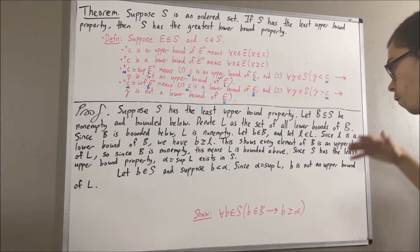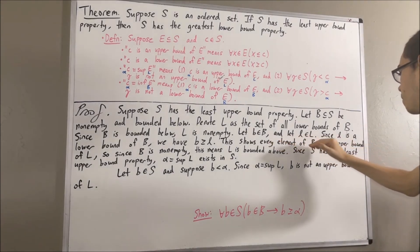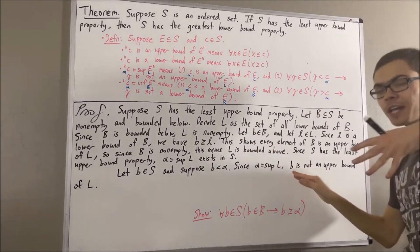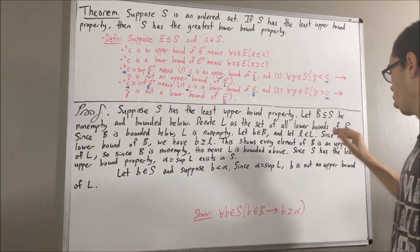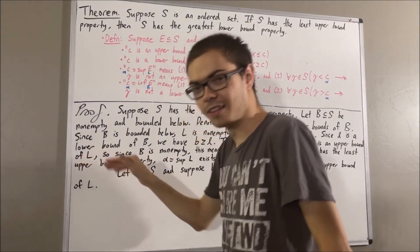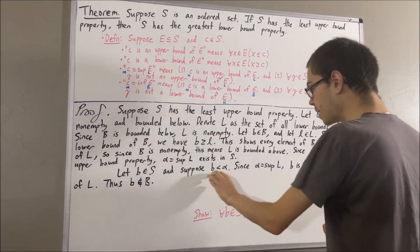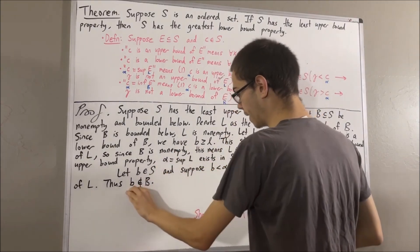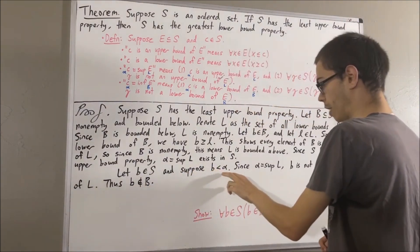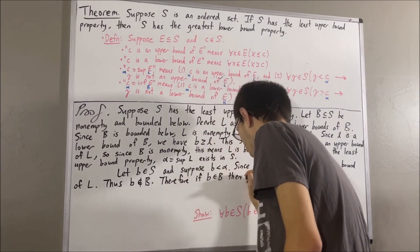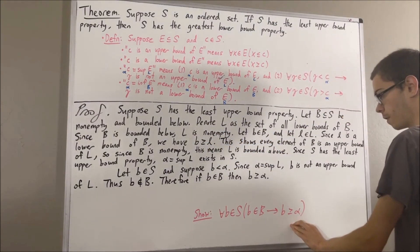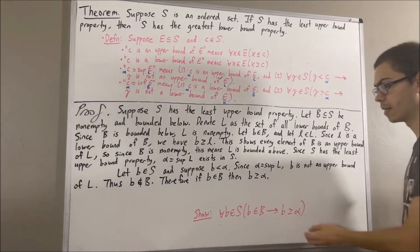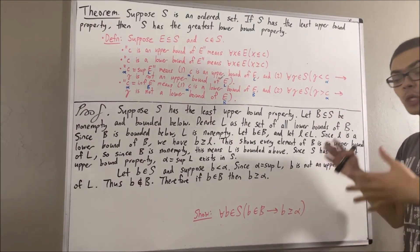So we have proven: if B is less than alpha, then B is not an element of B. And by the contrapositive, this means we have proven: if B is an element of B, then B is greater than or equal to alpha. Since B was an arbitrary element of S, we have proven for all B in S, if B is an element of B, then B is greater than or equal to alpha. And that is precisely what it means for alpha to be a lower bound of B.